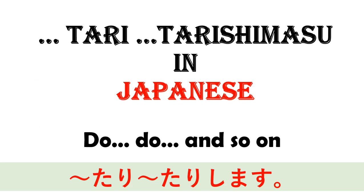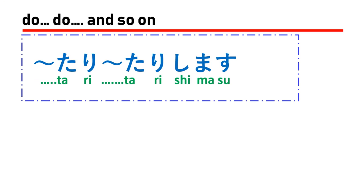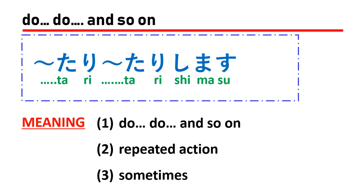Hi everybody, welcome to Japanese Easy Study channel. Today we are going to learn about the structure of nani nani tari nani nani tari shimasu in Japanese, which means in English 'do something, do something, and so on.' Let's go to learn about the details of this structure.